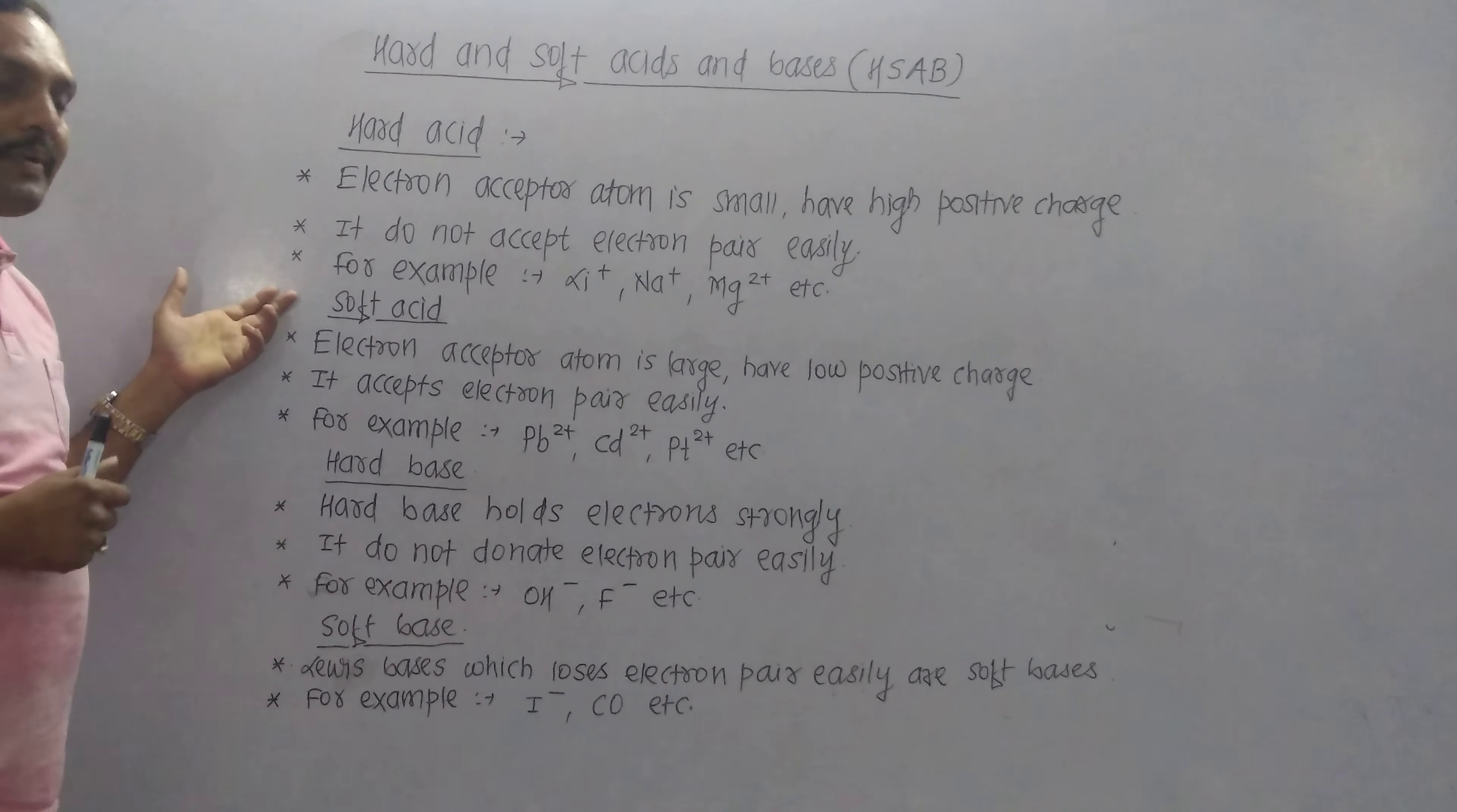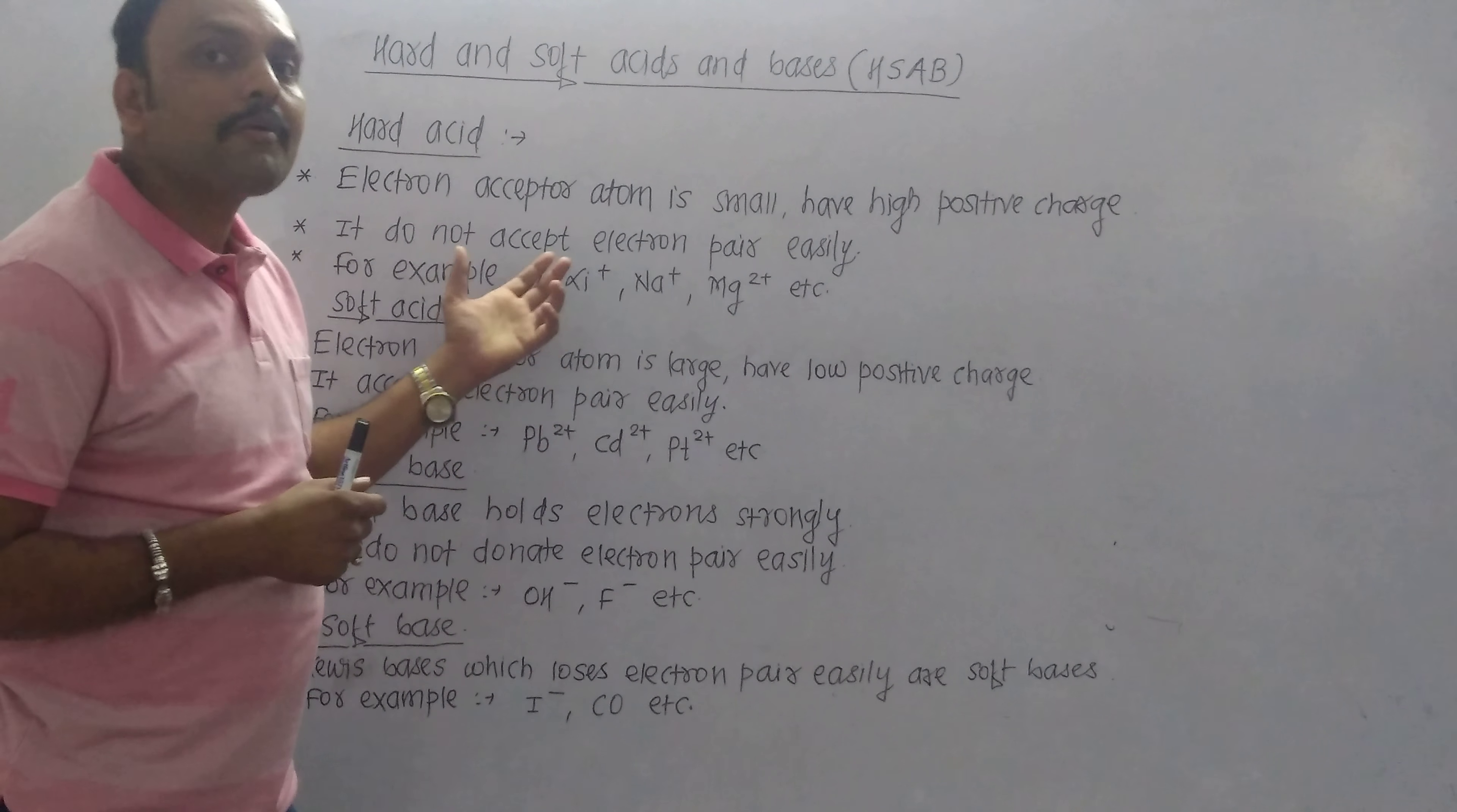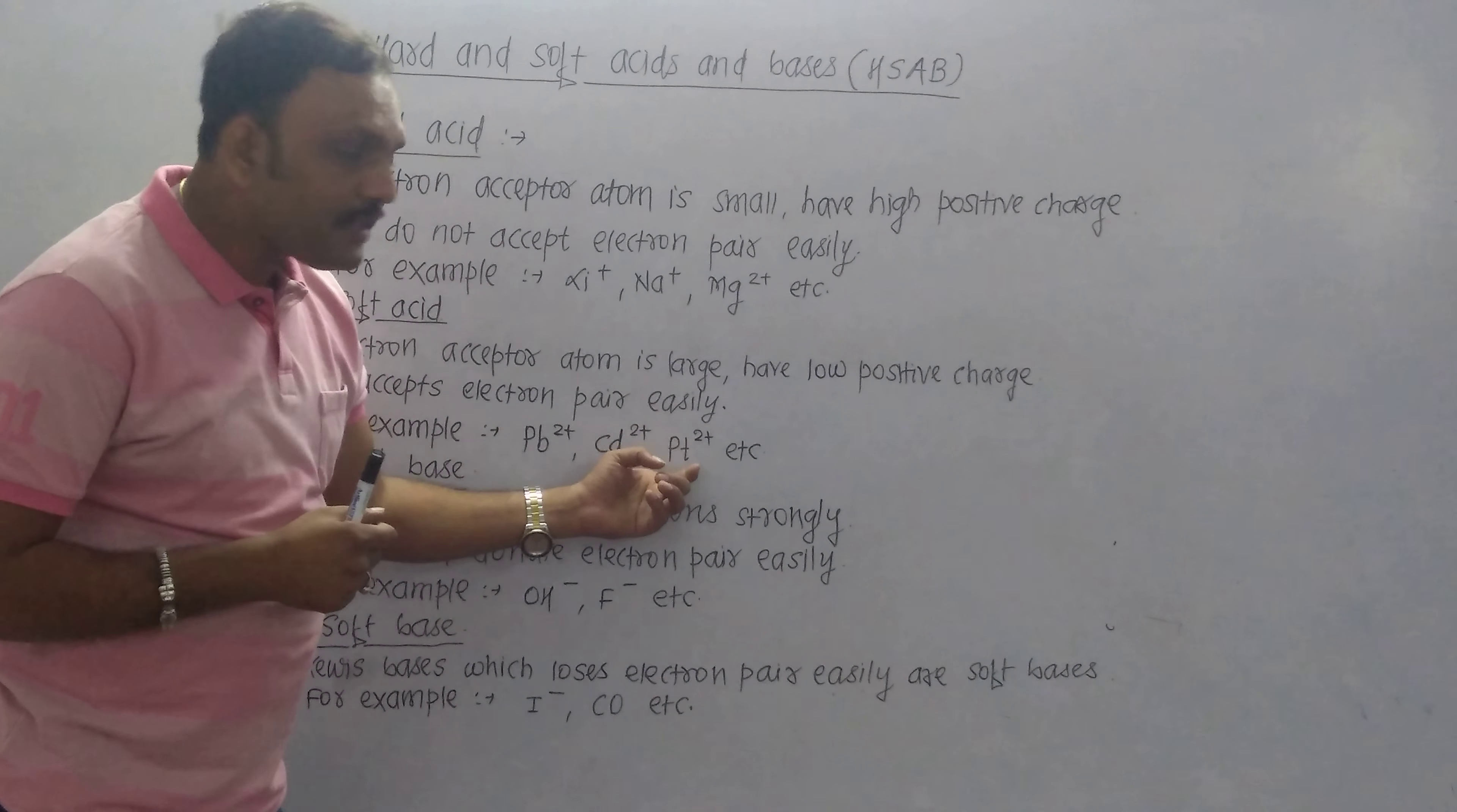On the other hand, a soft acid is a species which has a low positive charge, and the acceptor atom is larger. So it accepts an electron pair easily. Examples are Pd2+, Cd2+, Pt2+.